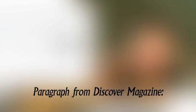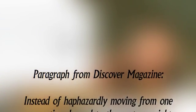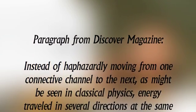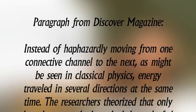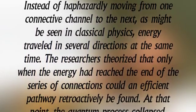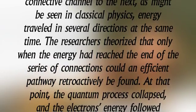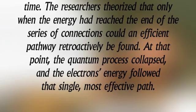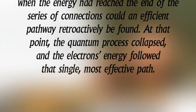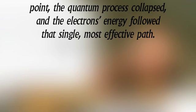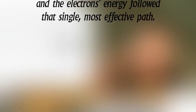Now here's a paragraph from that Discover Magazine article. Instead of haphazardly moving from one connective channel to the next, as might be seen in classical physics, energy traveled in several directions at the same time. The researchers theorized that only when the energy had reached the end of the series of connections could an efficient pathway retroactively be found. At that point, the quantum process collapsed, and the electron's energy followed that single, most effective path.